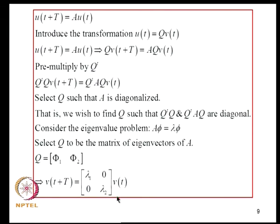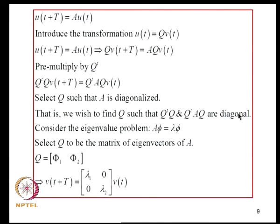To analyze U(t+T) = A·U(t), we introduce a transformation U(t) = Q·V(t) with the aim of diagonalizing the A matrix. Pre-multiplying by Q transpose, we want Q such that Qᵀ·Q and Qᵀ·A·Q are diagonal. We consider the eigenvalue problem A·φ = λ·φ, noting that A is real but not necessarily symmetric. We select Q to be the matrix of eigenvectors φ₁, φ₂ of A.